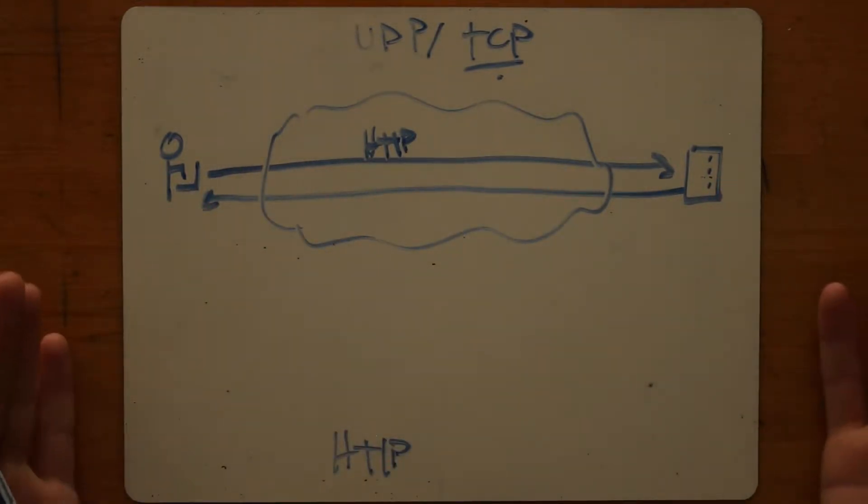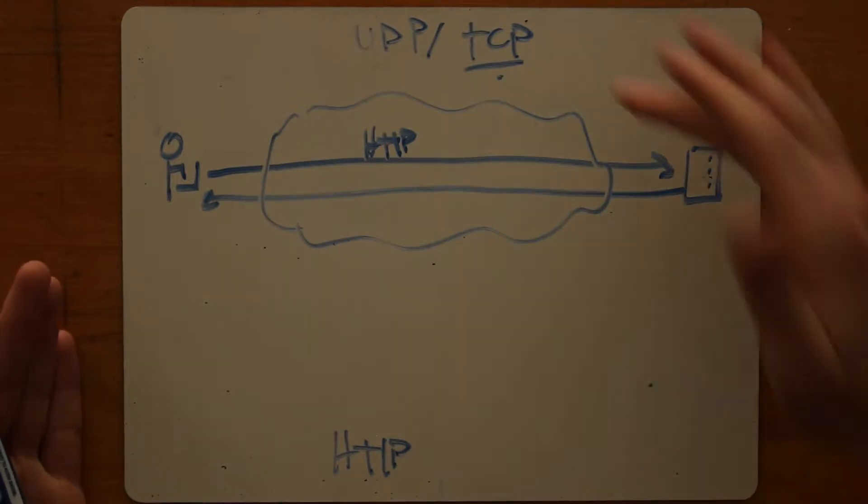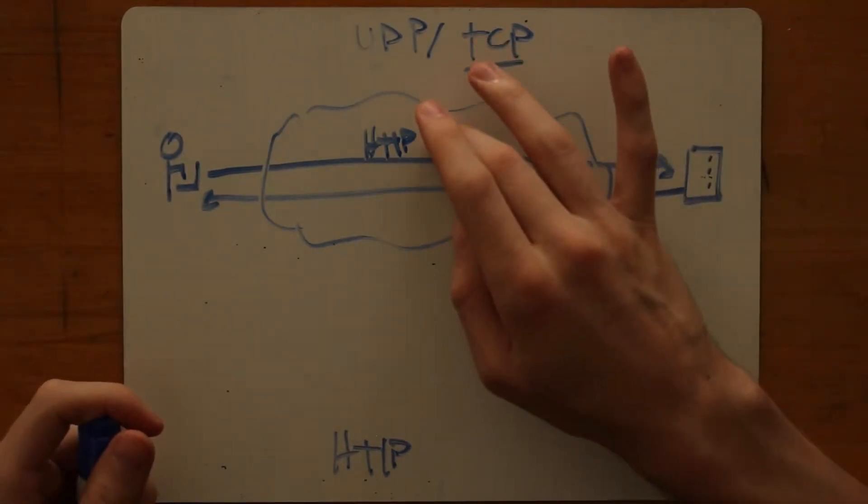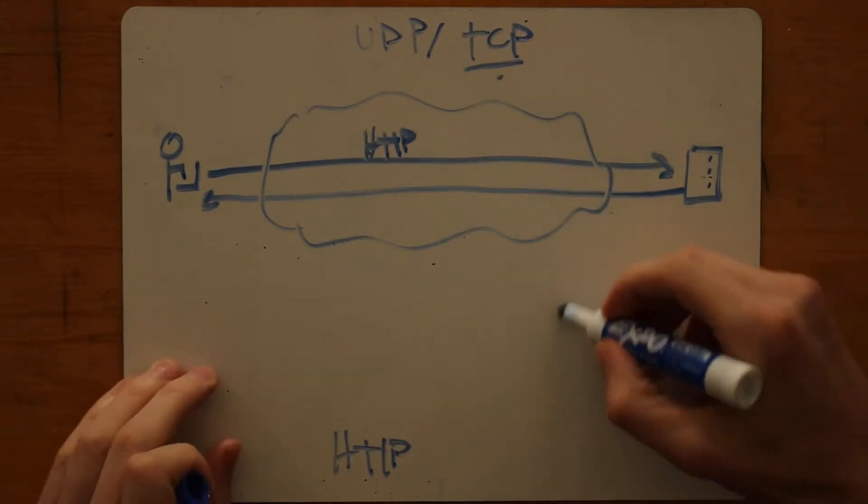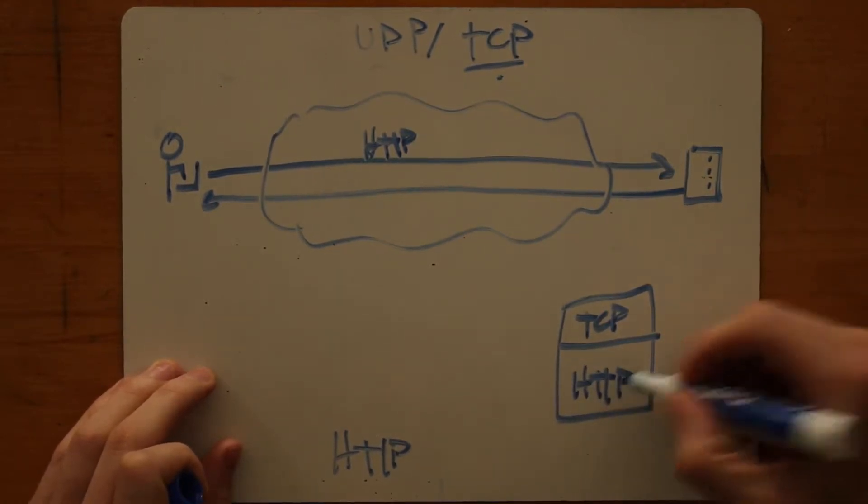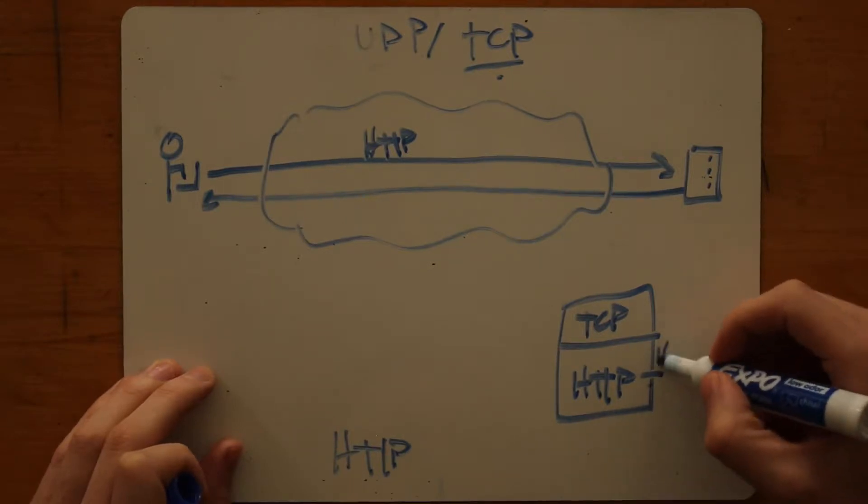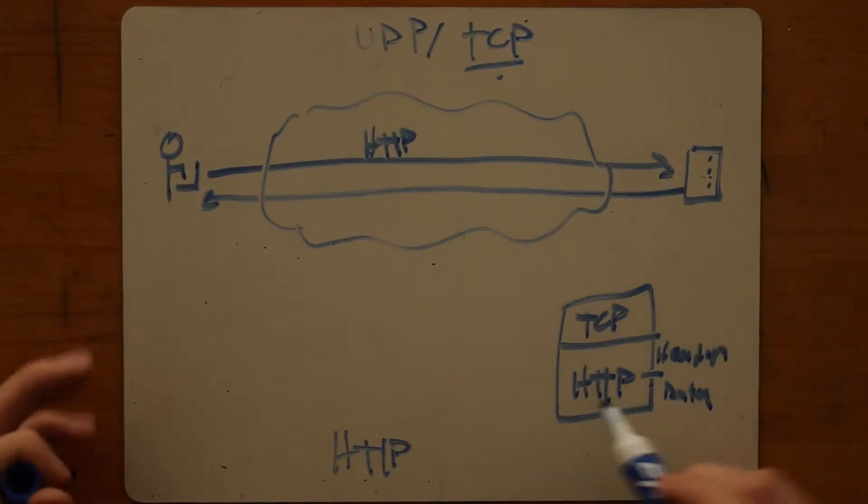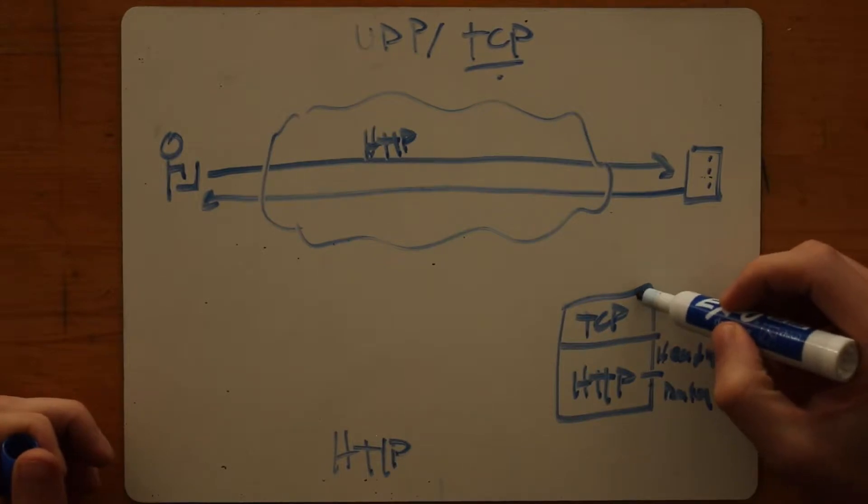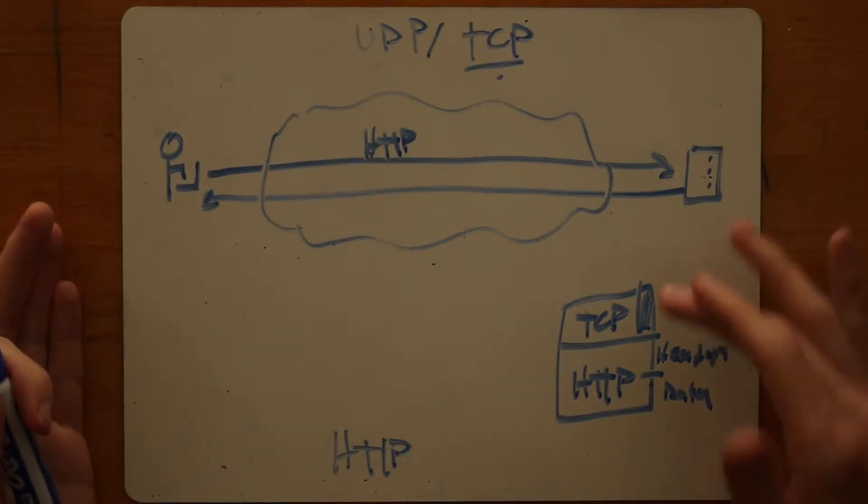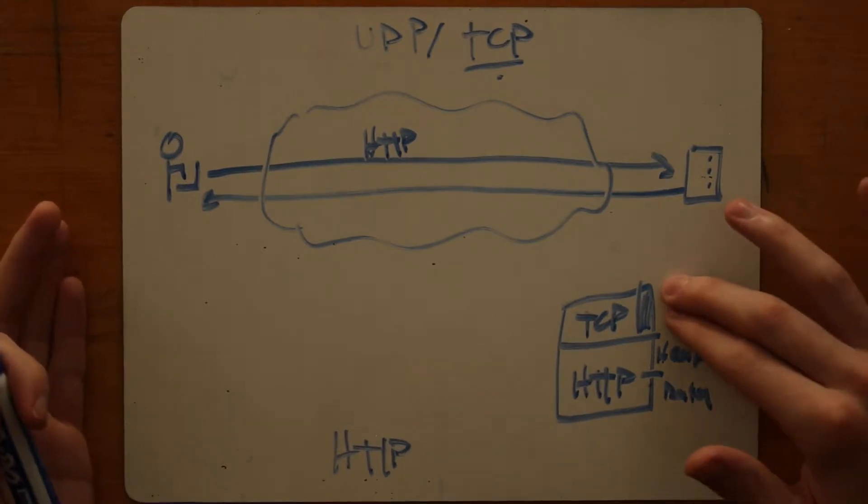And part of being able to provide that guarantee is that TCP has to set up a connection between these two computers. So in addition to being able to shuttle the HTTP data, remember, we have a TCP header followed by our HTTP data, which itself has headers and data. So in addition to shuttling this HTTP data, the stuff in here in this TCP header that's sent along with every HTTP request helps us manage the data. It's like metadata about this data, data about the connection.